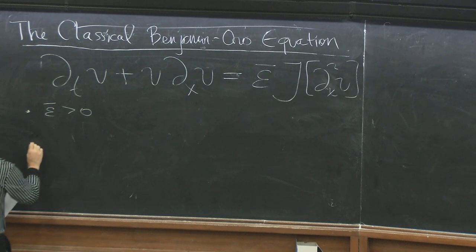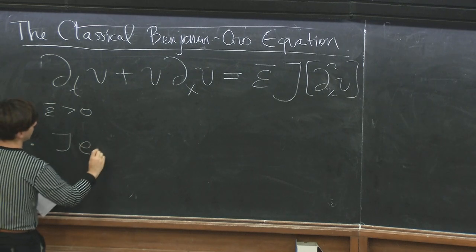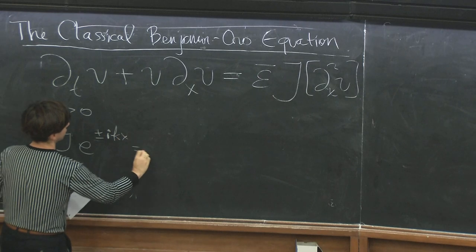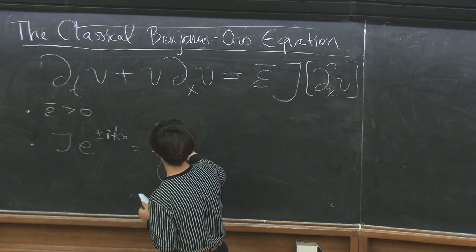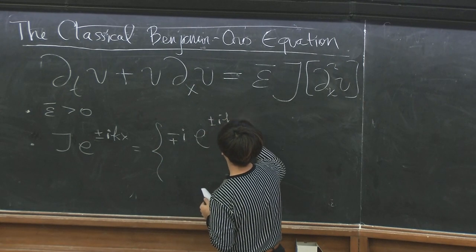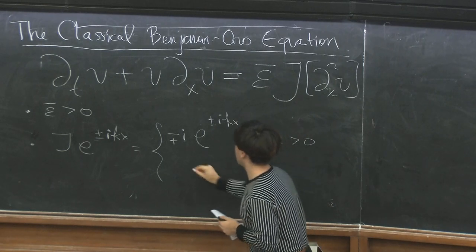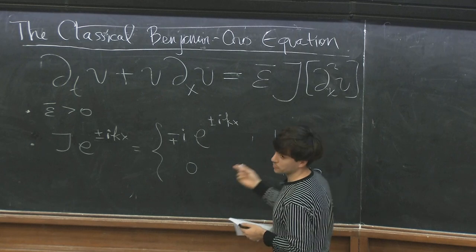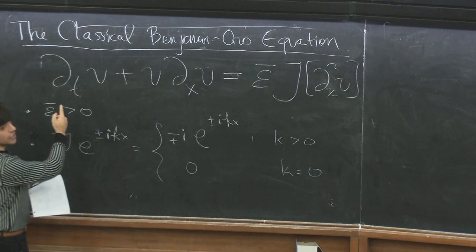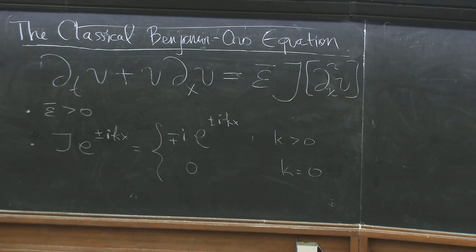j is the Hilbert transform, which I can write in the following way — I just have to tell you what this thing does to a plane wave. It multiplies by minus i times the sign of the plane wave if k is positive, or it multiplies by zero. This is the Fourier multiplier of j; you could write it as a singular integral operator. Without this j, the equation would be the viscous Burgers equation in one dimension — a diffusive equation. However, due to this non-local operator j, this is actually not diffusive; it's conservative.